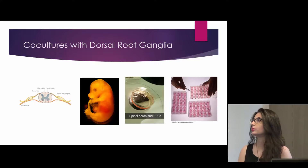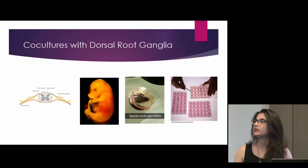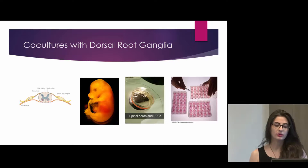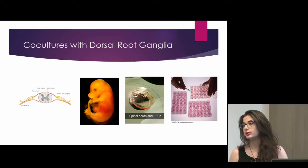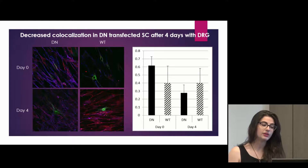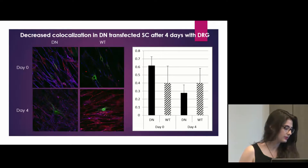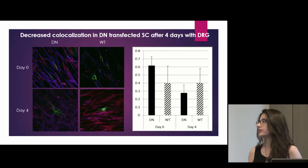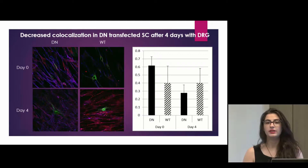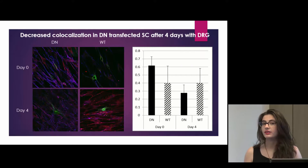We also did co-cultures with dorsal root ganglia, which are interneurons found in the spinal cord and peripheral nervous system. We took E16 rats, performed a microdissection, removed spinal cords and DRGs, and plated the DRGs, later treating them with Schwann cells that were already transfected with dominant negative and wild-type RAB7. Dominant negative RAB7 is inactive, whereas wild-type RAB7 is normal. After four days in co-culture, the dominant negative RAB7-treated Schwann cells displayed a decrease in co-localization with phospho-MLC, which supports our hypothesis that RAB7 and non-muscle myosin-2 have a regulatory relationship.